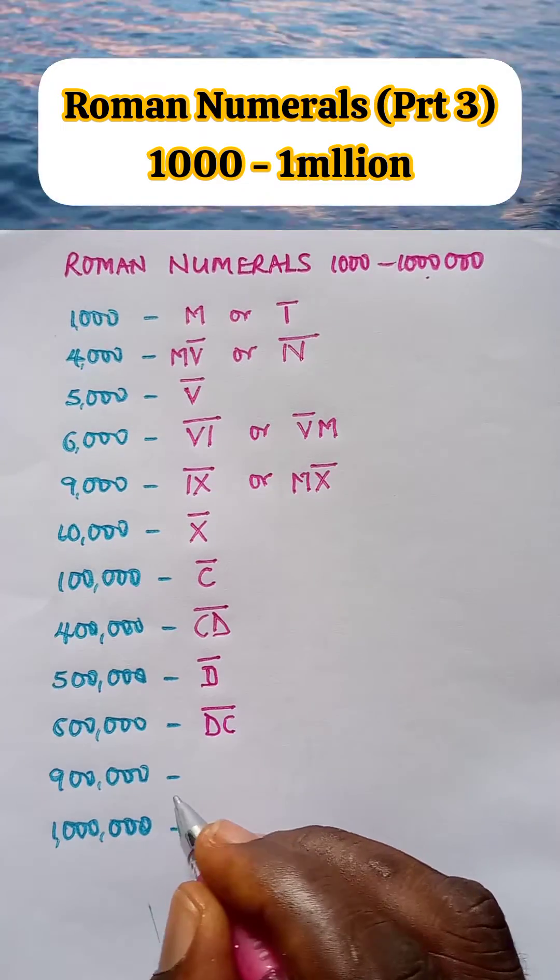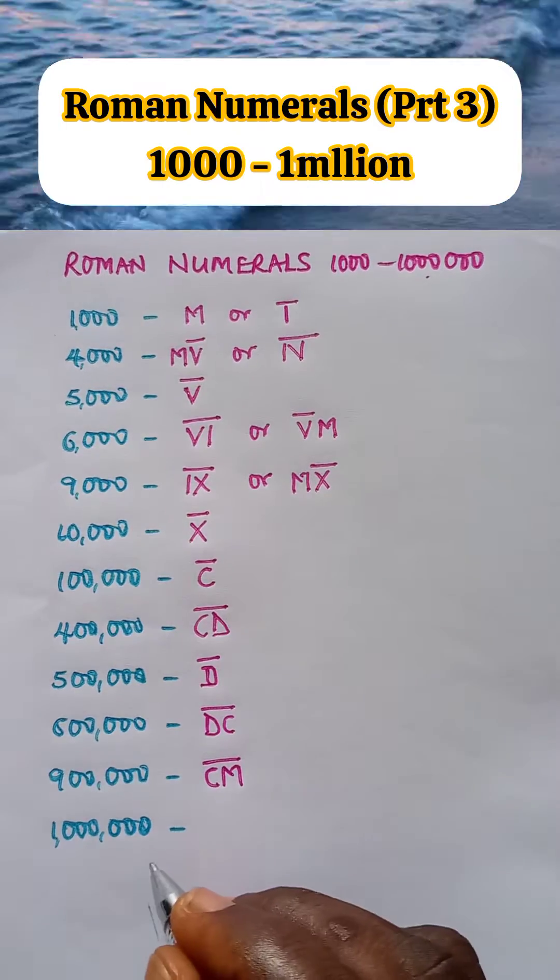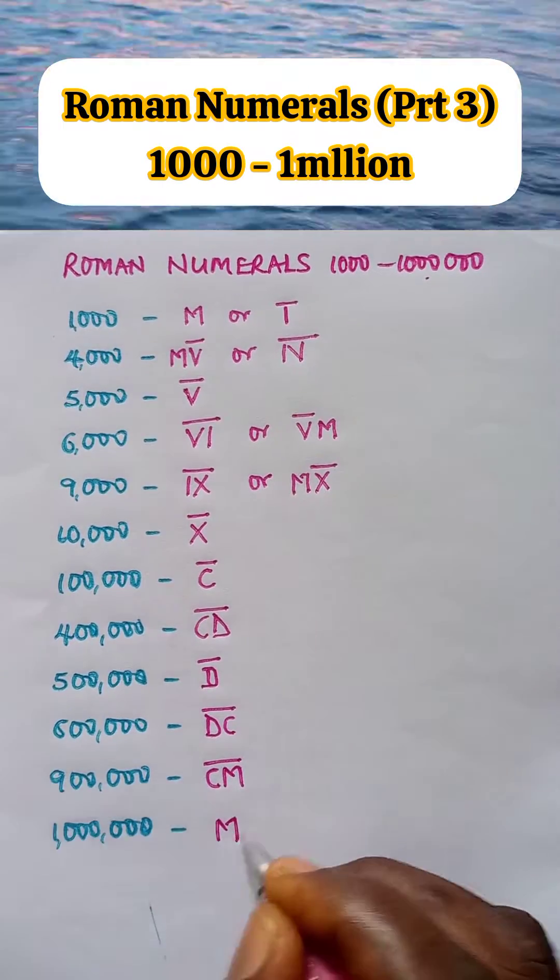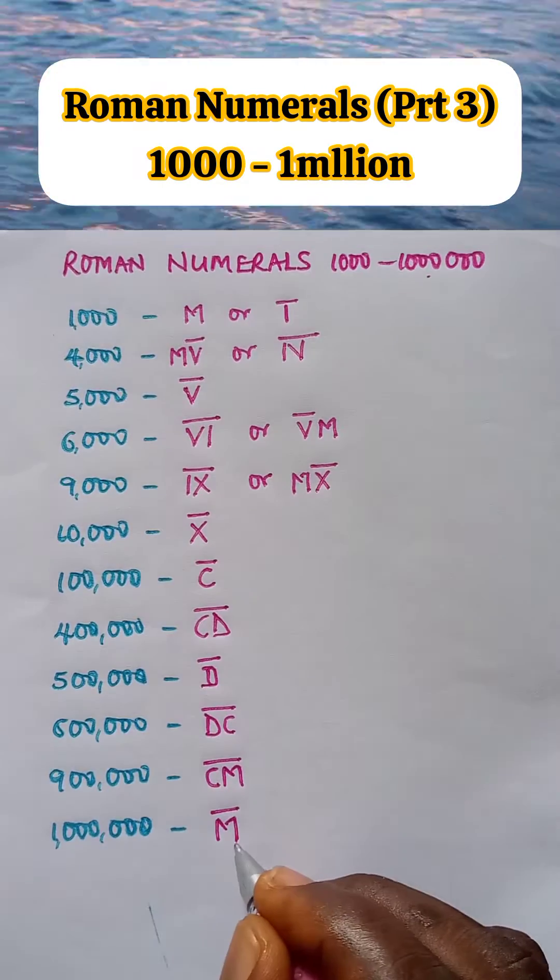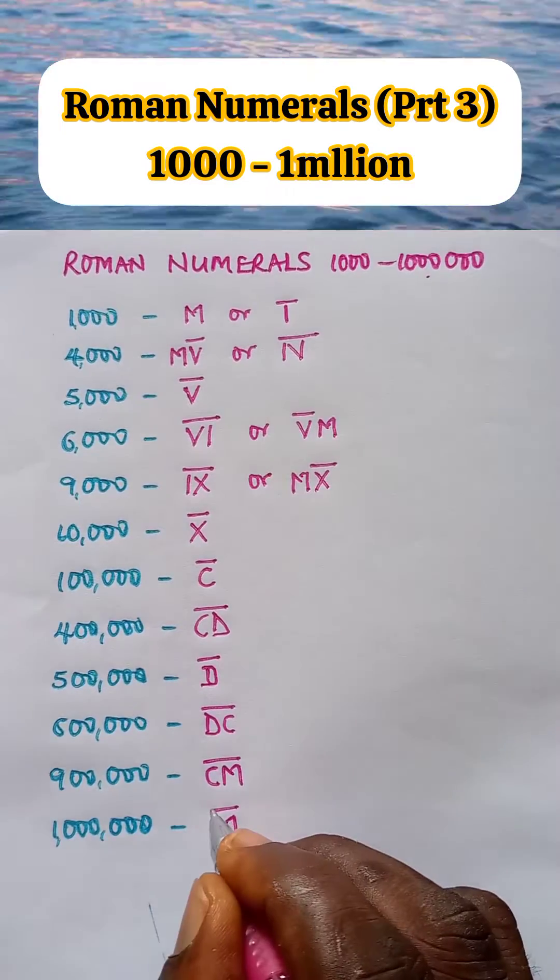Nine hundred thousand is MC, which is nine hundred, then bar, CM bar. One million is M bar. M is a thousand, and bar is a thousand. A thousand thousand is one million. Thank you.